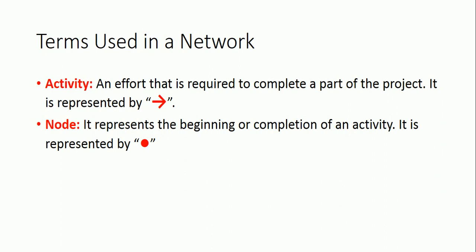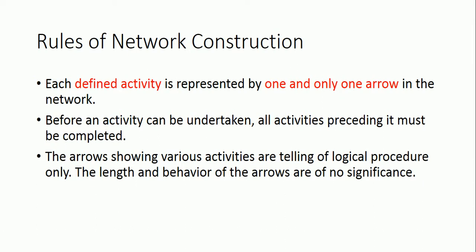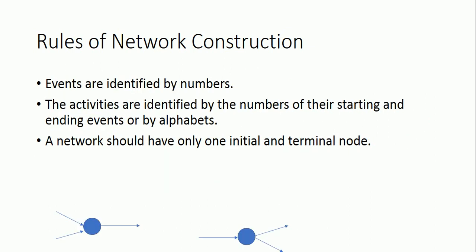Each activity is represented by an arrow in the network. A node represents the beginning or completion of an activity. Each defined activity is represented by one and only one arrow in the network. Before an activity can be undertaken, all activities preceding it must be completed. The arrows showing various activities indicate logical procedure only — the length and direction of the arrow are of no significance. Events are identified by numbers; activities are identified by the numbers of their starting and ending events or by alphabets. A network should have only one initial and one terminal node.